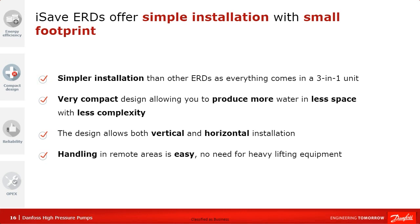The iSave is called a three-in-one because it combines the pressure exchanger, a positive displacement vane pump used as a booster pump, and a flow meter function — because it's a positive displacement pump, if you know the RPMs of the iSave you also know the flow on the high-pressure side. It is very compact in design, allowing more water production in less space with less complexity, and it can be placed in both vertical and horizontal positions.